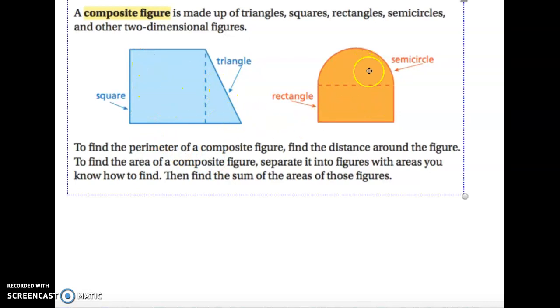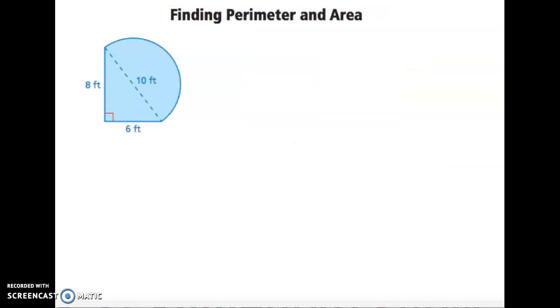For area we would have to find the area of each composite figure. So let's take a look at some specific examples. First, let's identify what figures make up this composite figure. This composite figure is made up of a triangle and a semicircle.